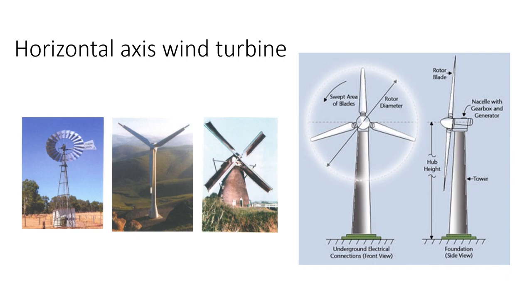Horizontal axis wind turbines, or HAWTs, have the main rotor shaft and electrical generator at the top of the tower and must be pointed into the wind. Small turbines are pointed by a simple wind vane while large turbines use a wind sensor coupled with a servo motor. Most have a gearbox which turns the slow rotation of the blades into a quicker rotation more suitable to drive an electrical generator.